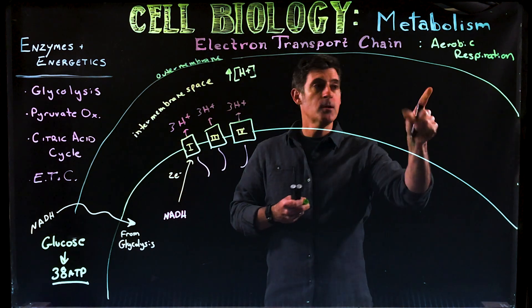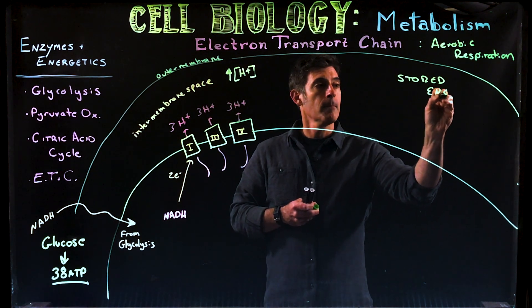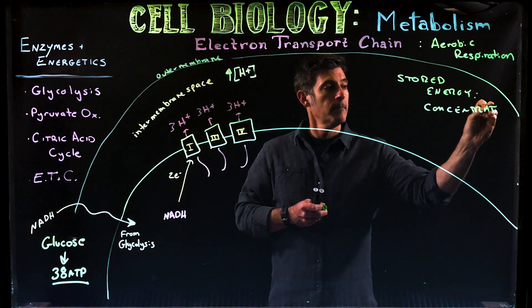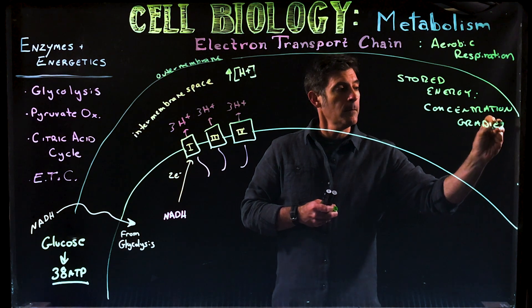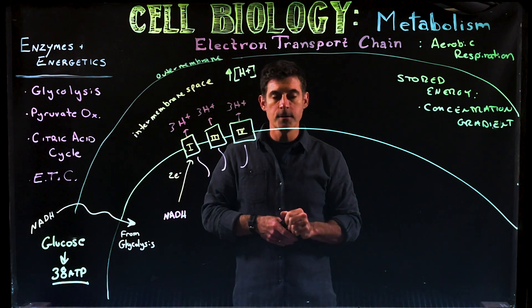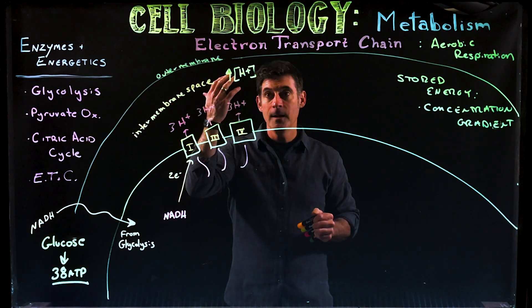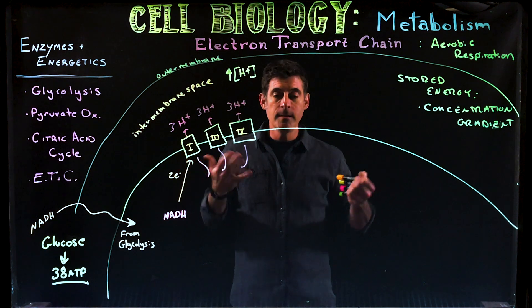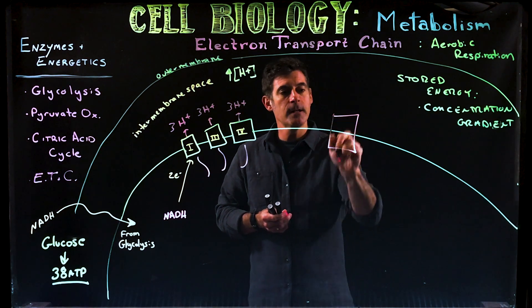This area here, this intermembrane space, has the stored energy of a concentration gradient. You'll also see this referred to as a proton motive force. It's a concentration gradient, proton motive force just means a high concentration of protons in this area, and the energy is now stored and unstable and needs to go somewhere. That's what we're going to look at. Where is it going to go and how is it going to get out of that space?